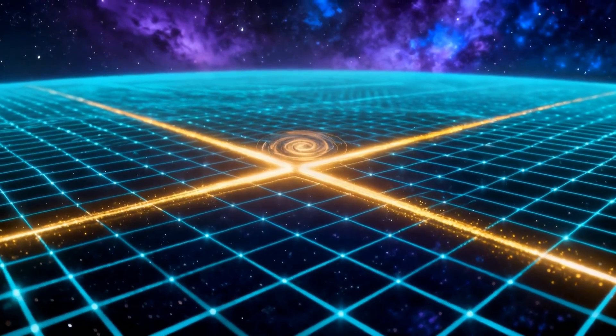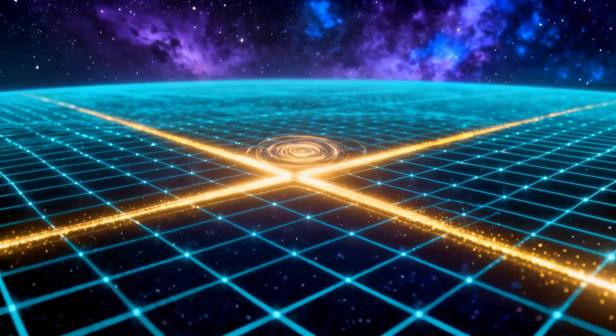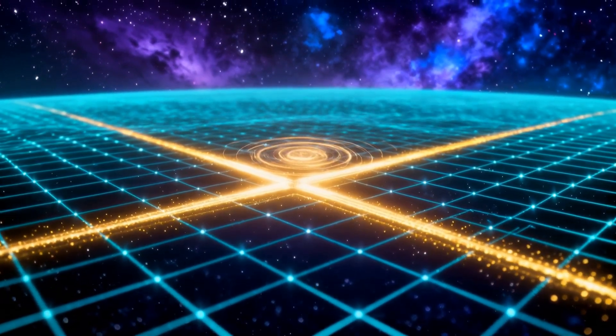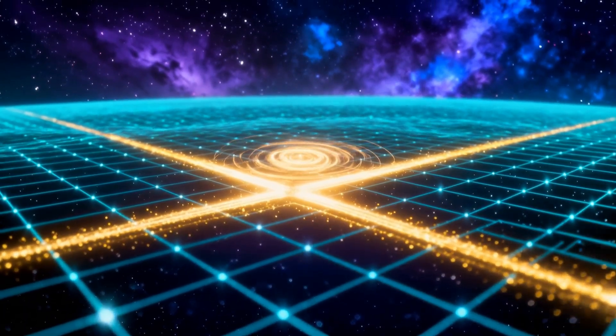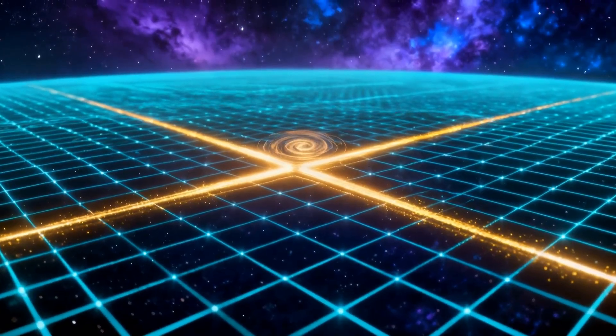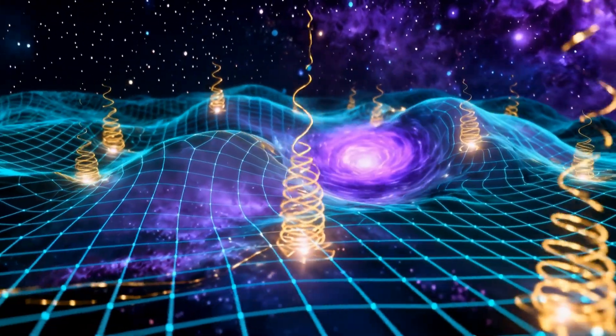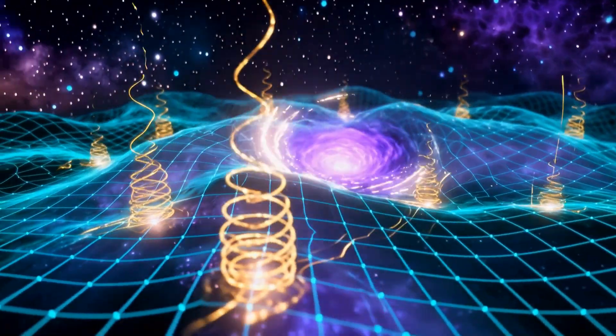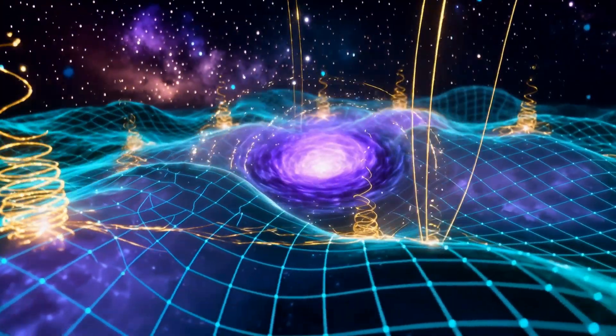Infinity could represent an infinitely extended field. A cross might symbolize a point of intersection. And a wobbling vortex suggests rotational motion. So interfering infinity with a vortex means introducing a localized rotating disturbance into an otherwise infinite uniform field.